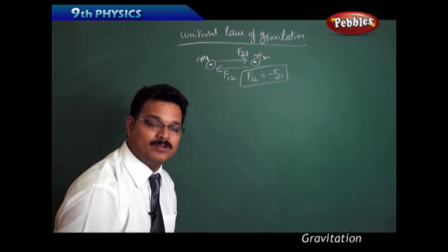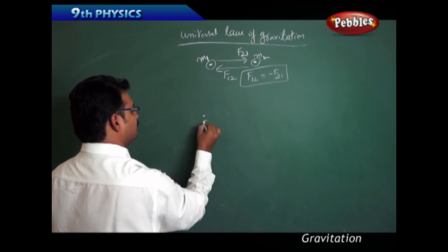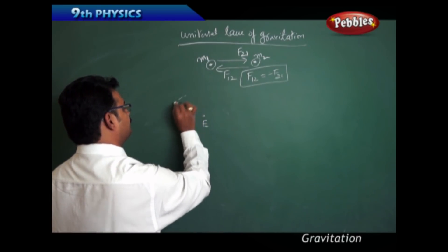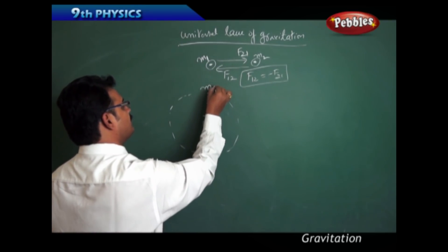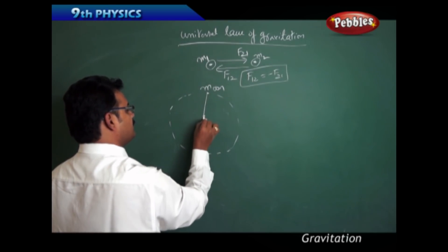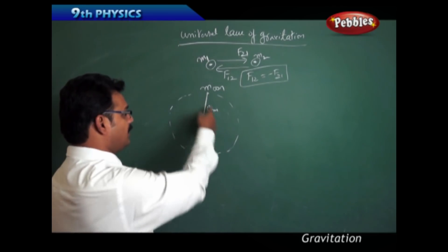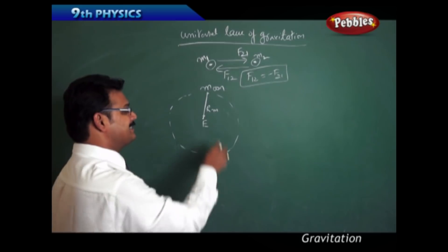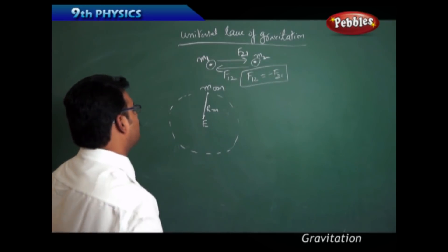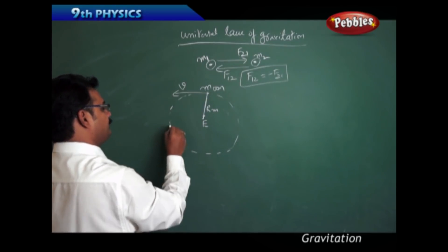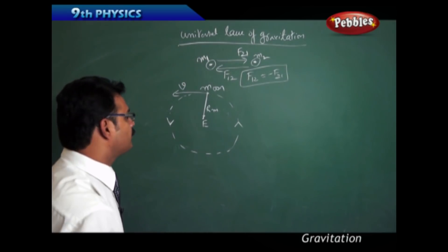Now, how will we derive the formula for the force of gravitation? Take a case study: the moon is rotating around the earth in a circular path. Here, r_m is the radius of the circular path of the moon, or you can say it is the distance from the earth to the moon. The moon has a velocity v and is moving in a circular path like this.